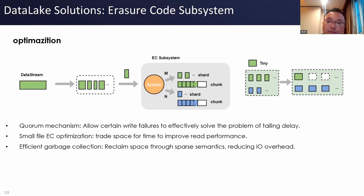Multi-copy implementation is simple but data durability is average, resource utilization is low, and storage costs are high. Erasure codes are more complex to implement with higher data durability, higher resource utilization, and lower storage costs. One should comprehensively evaluate data redundancy strategies across multiple dimensions such as business data scale, access model, durability, and cost requirements. Taking the OPPO mobile phone cloud backup business as an example, it supports hundreds of millions of users. The data volume is large and cost requirements are strong. At present, the lower-cost erasure coding engine has been fully deployed in OPPO.